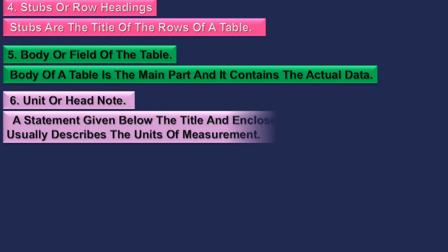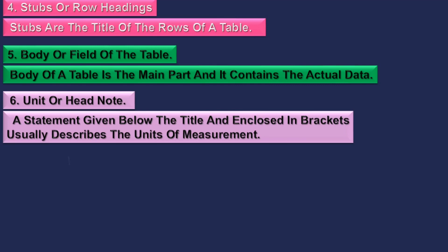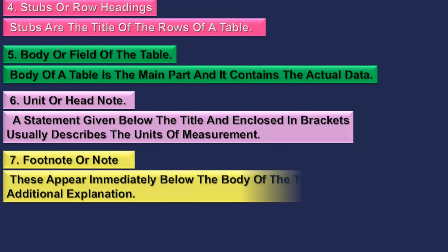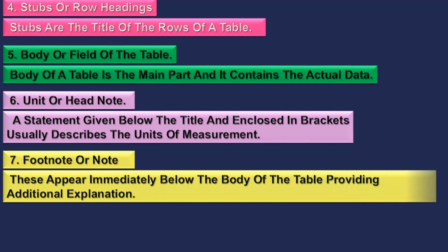6. Unit or Head Note — a statement given below the title and enclosed in brackets, which usually describes the unit of measurement. 7. Footnote or Note — these appear immediately below the body of the table providing additional explanation.